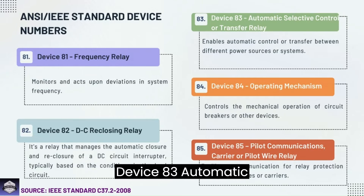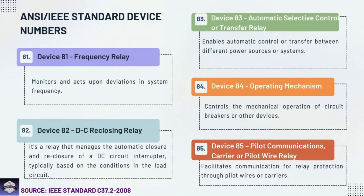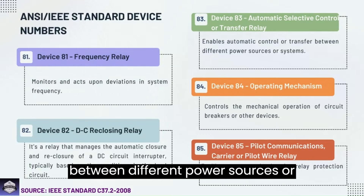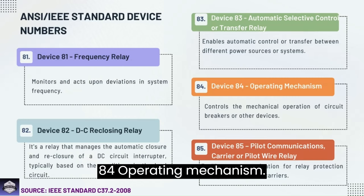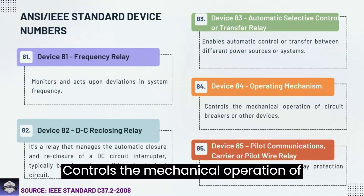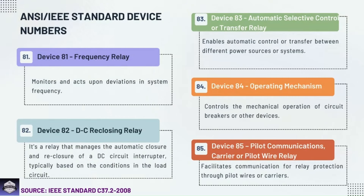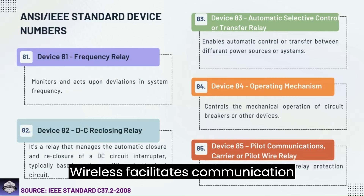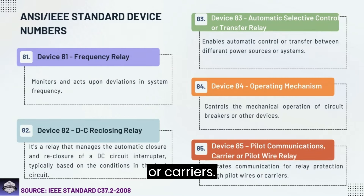Device 83: Automatic selective control or transfer relay — enables automatic control or transfer between different power sources or systems. Device 84: Operating mechanism — controls the mechanical operation of circuit breakers or other devices. Device 85: Pilot communications carrier or pilot wire relay — facilitates communication for relay protection through pilot wires or carriers.